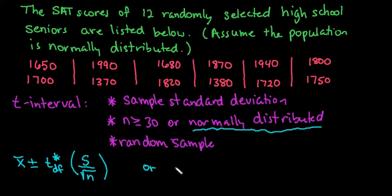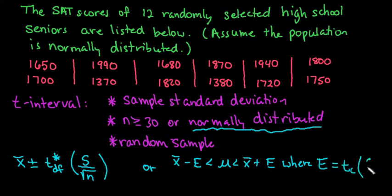Or your textbook may separate it where it says X bar minus E and tells you that the population mean is between X bar plus E, where E is equal to TC times S divided by the square root of N. The textbook I'm currently teaching from uses this one. I've taught from a textbook that used one similar to this, so that's why I included both.